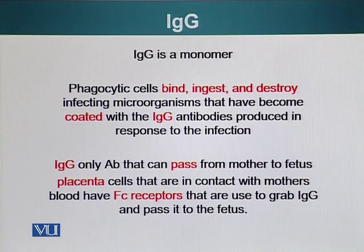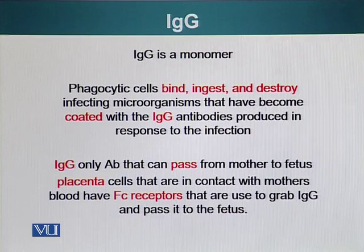IgG is the only antibody that can pass from mother to fetus through the placenta. Placental cells have special receptors that can bind the IgG molecules, internalize them, and pass them on to the fetus.